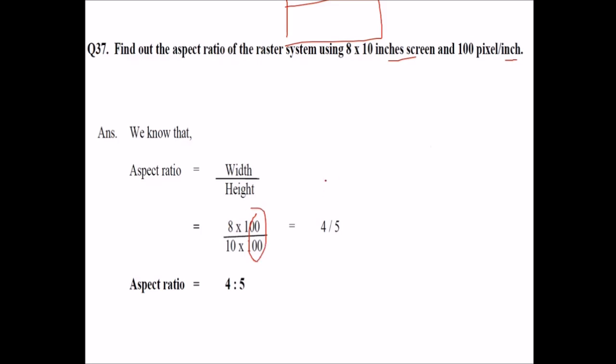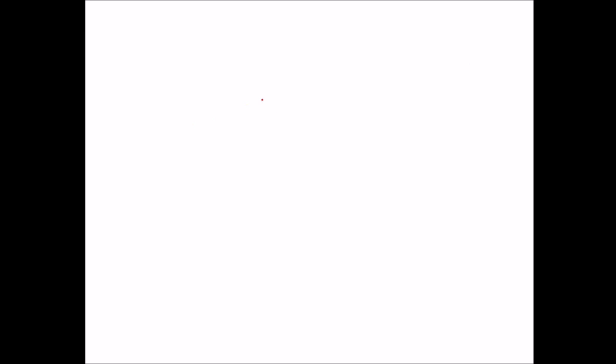The other is, find out the aspect ratio of the raster system using 8 by 10 inches screen and 100 pixels per inch. So inch is given in the denominator, so it's quite easy. The aspect ratio is width by height, this is 8 by 10 times 100, and this will be 4 by 5, that is the aspect ratio.